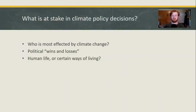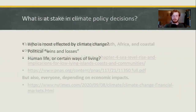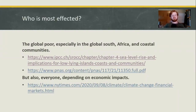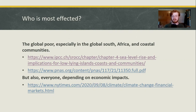So first, what's at stake? I have three categories: who's most affected by climate change, political wins and losses, and human life or certain ways of living — as in, are we going to go extinct as a species or is it just that we have to change how we live? Generally speaking, those who are going to suffer the worst effects from climate change are the global poor, especially in the global South, Africa, and coastal communities.